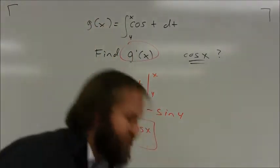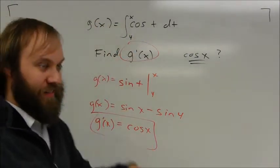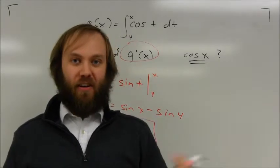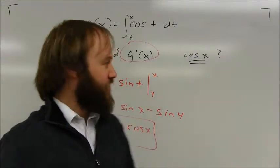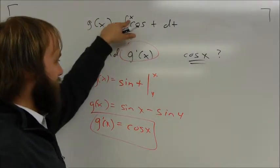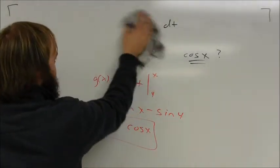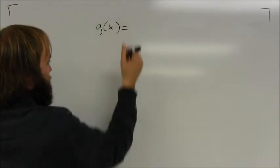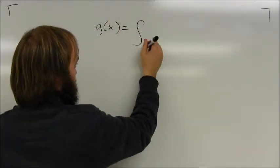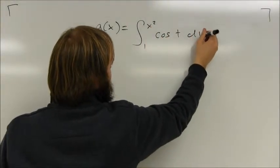One thing you do have to watch out for: every time I've done this so far, the constant lower bound ends up canceling and doesn't appear in the final answer — it can be 1, 0, or 47; it won't show up. However, I've been using x in the upper limit position. I'm going to redo essentially the same problem but with x squared instead, and you'll see one slight issue that comes into play. Let's say g(x) equals the integral from 1 to x² of cosine(t) dt.